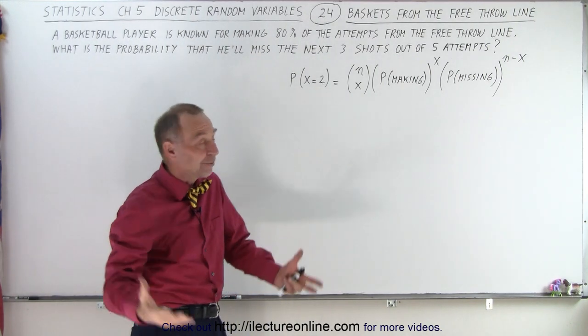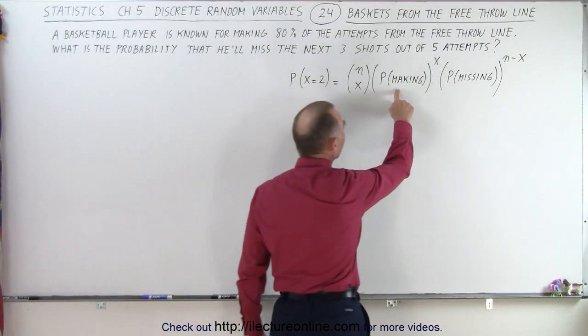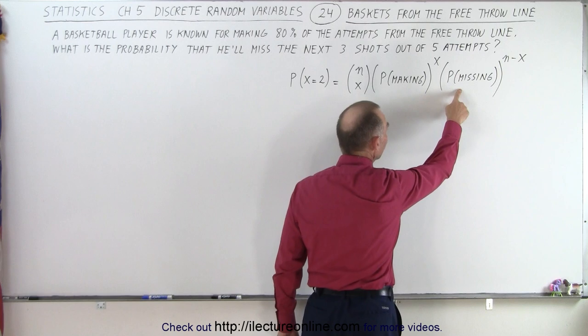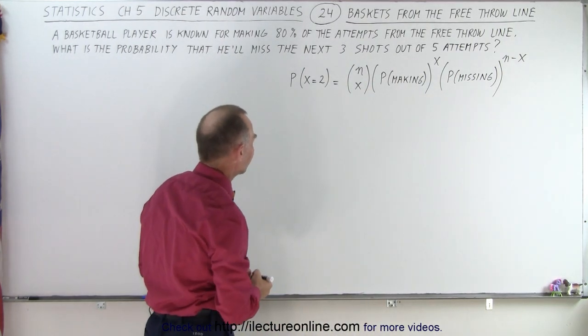So in this case, n will be five because there's five attempts. We have the probability that he'll be making the shot and the probability that he'll be missing the shot based upon the information given. So let's try to figure out how to calculate that.